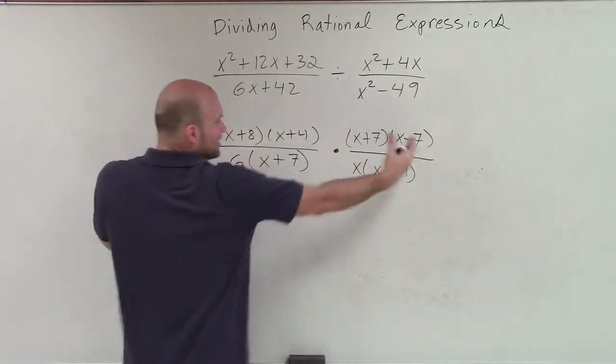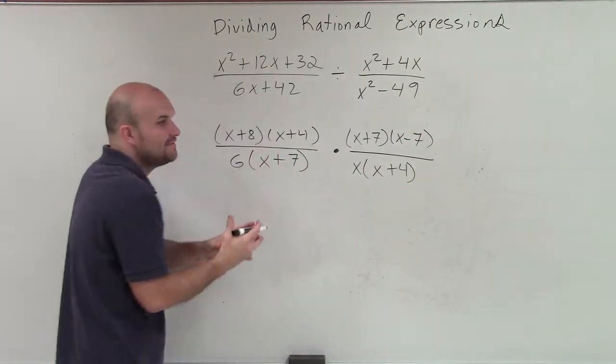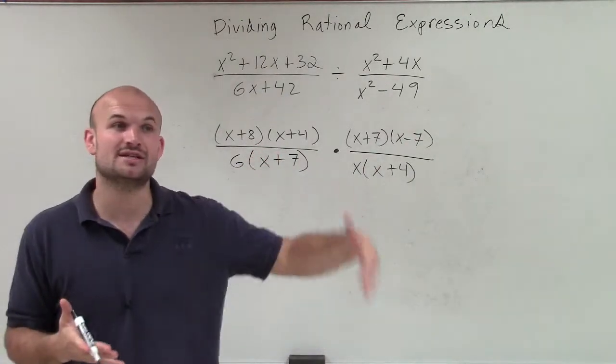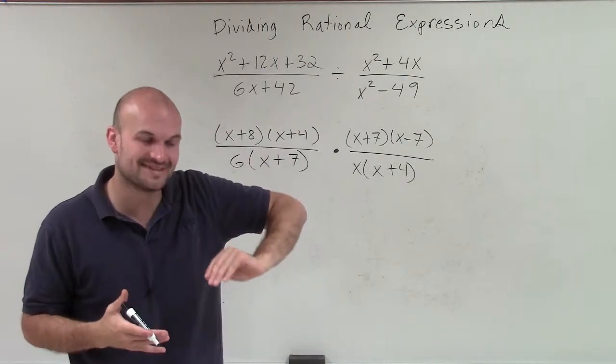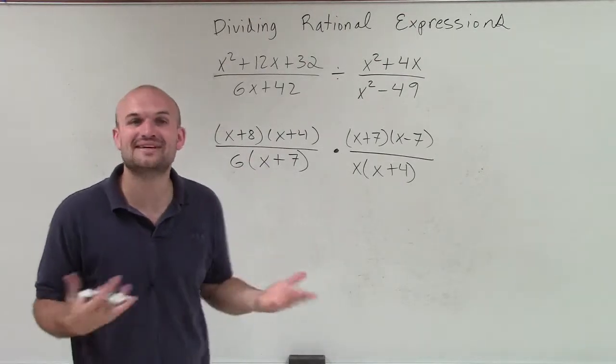Now, I don't need to have so much separation. I could write these all next to each other. And then, since we're going to cross multiplication, anything that is on the numerator and the denominator that is the same, we can divide out to 1.